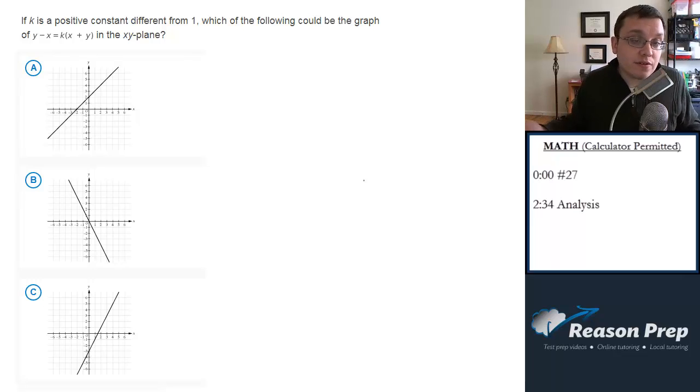Since k can be anything different from 1, let's just pick a k, let's pick k as 2, plug it in, see what we get as the equation of our line, and look at the choices and see which one works. So let's pick k as 2. You could do any positive number greater than 1, I'm just going to use 2 because it's easy.